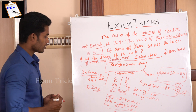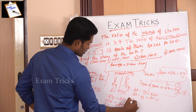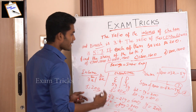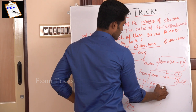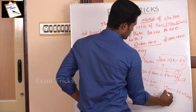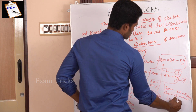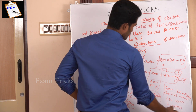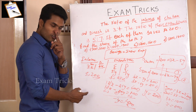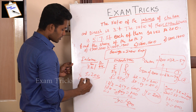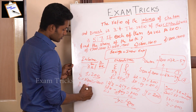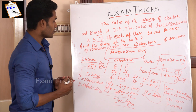So y equals 200. Substituting y equals 200 back into the equation gives x equals 400. Therefore the incomes are: Chetan's income is 3x equals 3 times 400 equals 1200, and Dinesh's income is 4x equals 4 times 400 equals 1600.